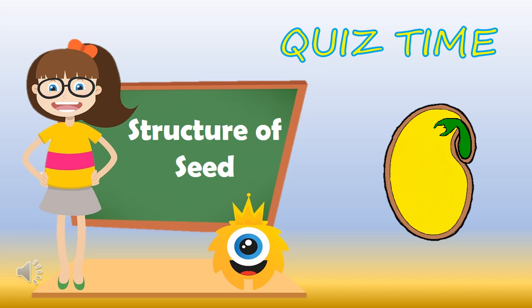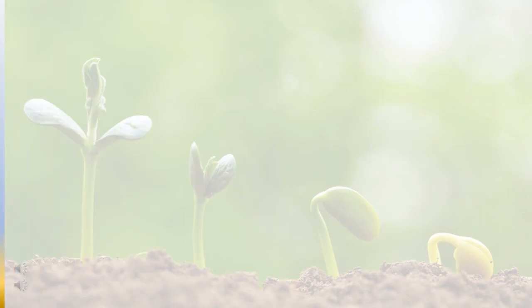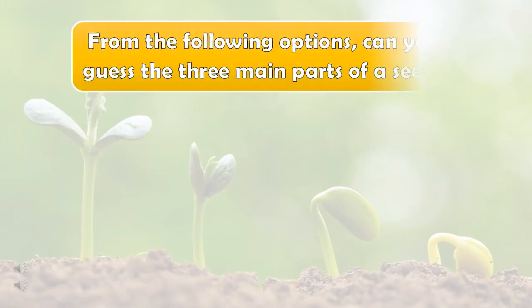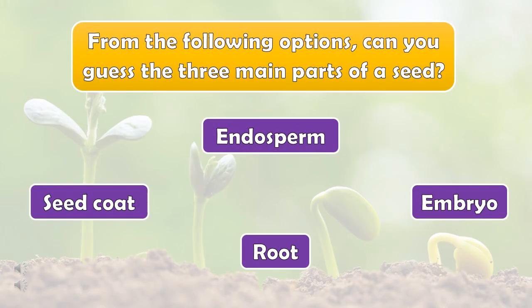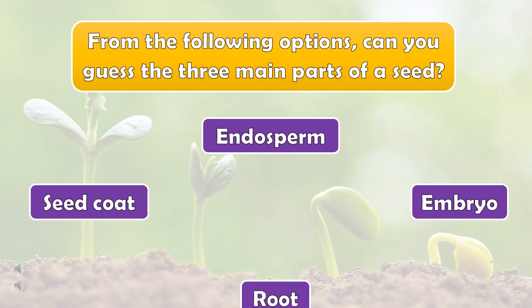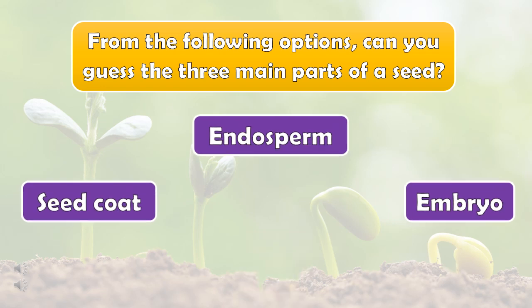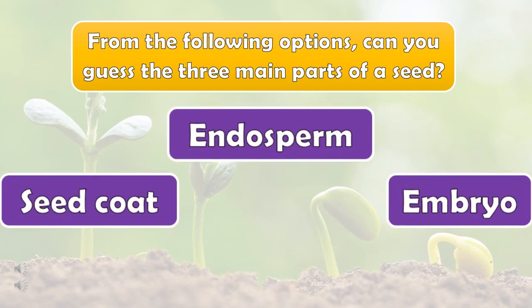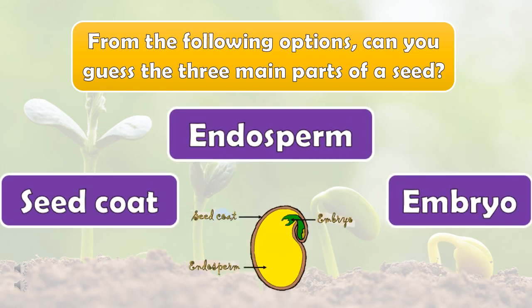Quiz time! From the following options, can you guess the three main parts of a seed? The right answer is seed coat, endosperm, and embryo.